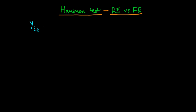In this example we have a dependent variable y which depends on an individual's characteristics, where the individual is given by i, for a particular point in time. We say that y is equal to beta_0 plus beta_1 times some explanatory variable which varies across individuals and across time. We also suppose that there is some hidden unobserved factor alpha_i which we should also be including in our model.